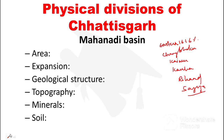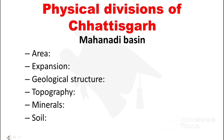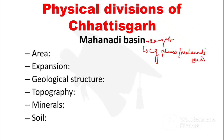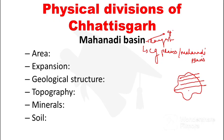Today we will see about Mahanadi Basin. The Mahanadi Basin is the largest physical division. The other names of this area are 36 Garh Plains and Mahanadi Plains. We also call this area 'Dhan Ka Katora' — the rice bowl — because we have more production of paddy here. The land is on a plain surrounded by mountains on four sides, making it very fertile for paddy production.